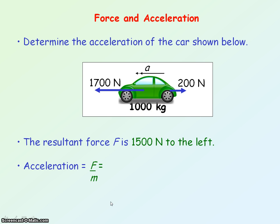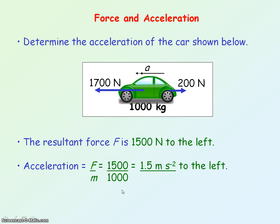The acceleration will be equal to our resultant force divided by the mass. The mass of the object is 1000 kg, so it will be 1500 newtons divided by 1000 kg, which gives an acceleration of 1.5 metres per second squared, acting to the left.